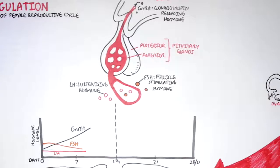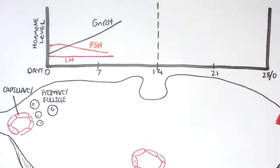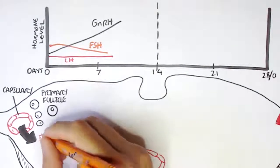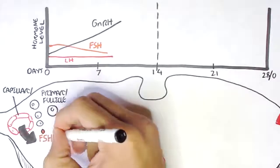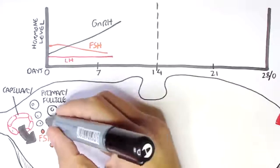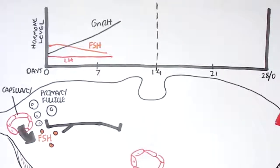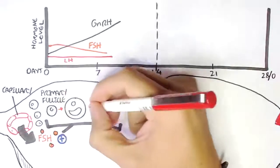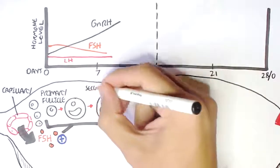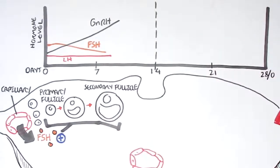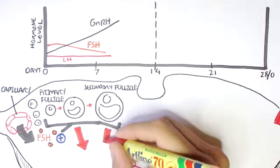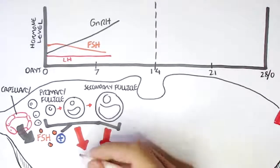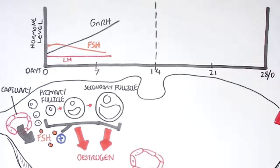Going back to the ovary: FSH will initially rise. Because the follicular phase is the first phase of the menstrual cycle, FSH will enter the ovaries and stimulate follicle maturation of these primary follicles. Some of these primary follicles will mature into secondary follicles. While maturing, they produce another hormone called estrogen.